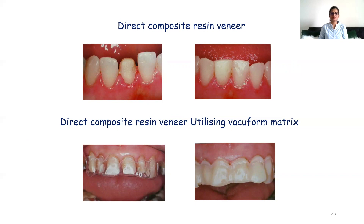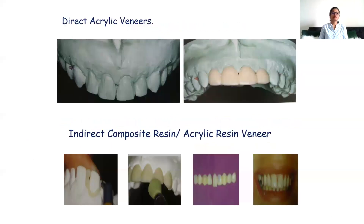The second technique is the direct composite resin veneer utilizing the vacuum foam matrix: a clear vacuum foam matrix is prepared on the preoperative cast, then the labial aspect of the matrix is filled with light-cure composite, placed on the prepared teeth, and the composite is set with the light-cure unit. Third is the direct acrylic veneer: self-cure acrylic resin is mixed and flowed into the labial aspect of the vacuum foam, allowed to reach the dull stage of curing, then set, removed, trimmed, polished, and cemented with temporary cement.